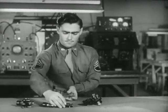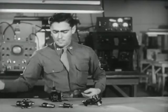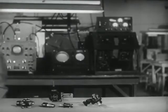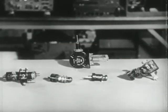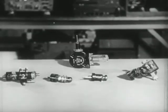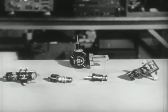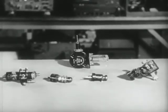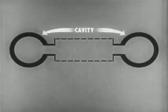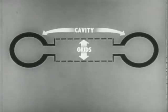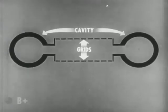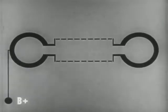The tubes in relation to a magnetron are comparatively small, since the peak power requirements for a local oscillator are not great. While these velocity modulated tubes may vary somewhat in their construction, they all operate on the same basic principle.